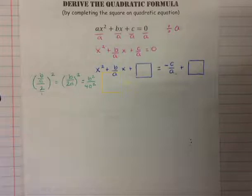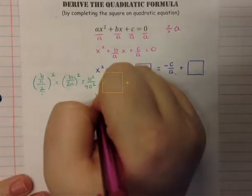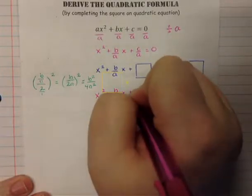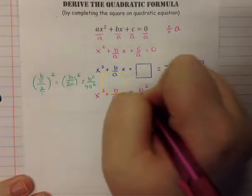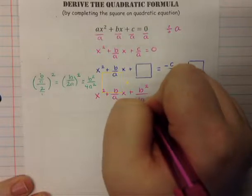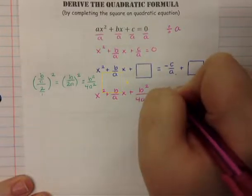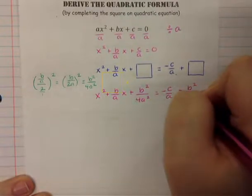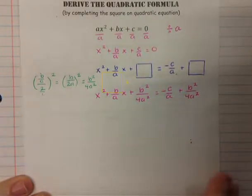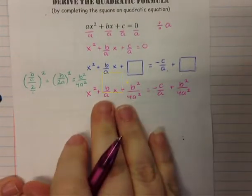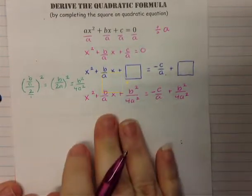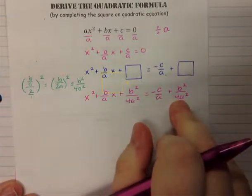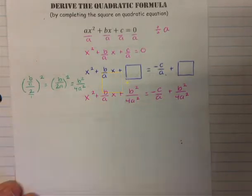Rewriting, we have x² + (b/a)x + b²/4a² = -c/a + b²/4a². The left side will factor because we created a perfect square trinomial, and then we have to combine the fractions on the right. Because they're fractions, we need common denominators.